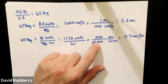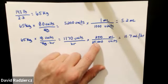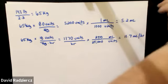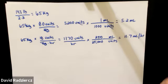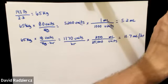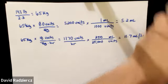This ratio is 1 over 100. So take 1,170 times 250 divided by 25,000, and you still get 11.7 milliliters per hour.